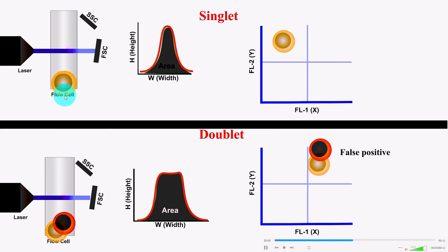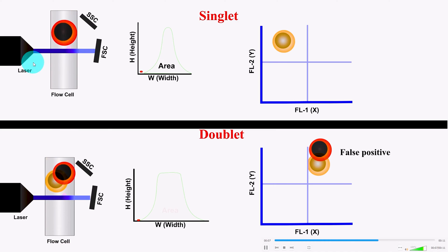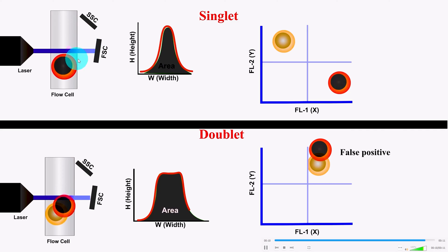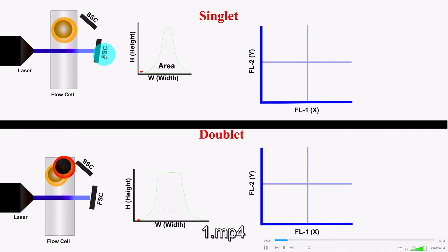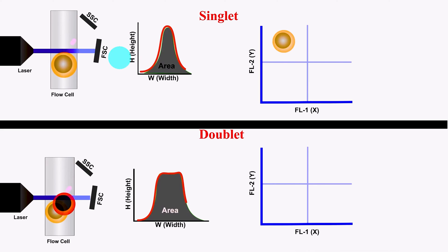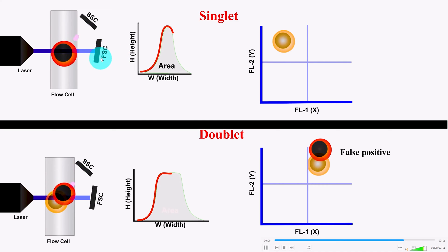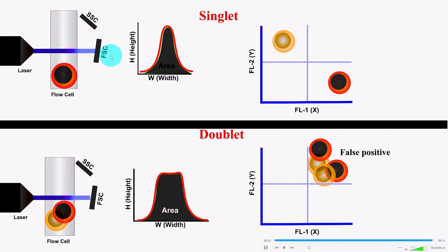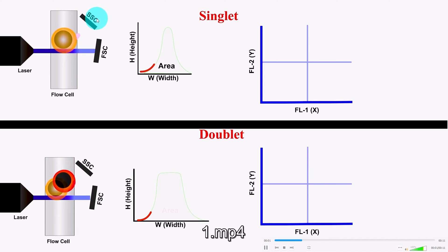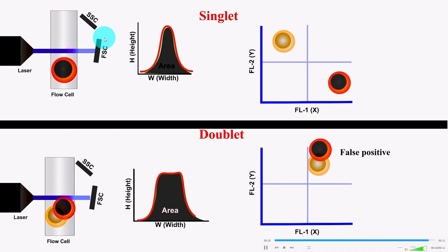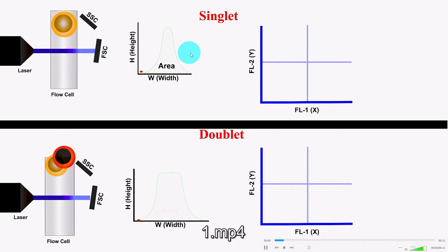As we all know, when a cell passes through the flow cell, it is hit by the laser beam and some amount of light is scattered in the forward direction and other directions as well. It is detected by detectors like the forward scatter detector and the side scatter detector, and there are many other detectors installed parallel to the side scatter detector. These signals are further processed to generate the data.